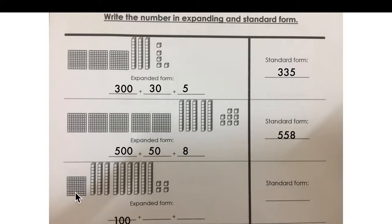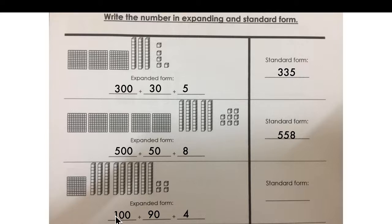Let's read this one. How many hundreds do you have? One hundred. How many tens? There are a lot — 1, 2, 3, 4, 5, 6, 7, 8, 9. Nine tens will be ninety. And how many ones? Four. Take the first digits and write them in standard form: from one hundred take 1, from ninety take 9, and here four. 1, 9, 4 — it will be one hundred ninety-four.